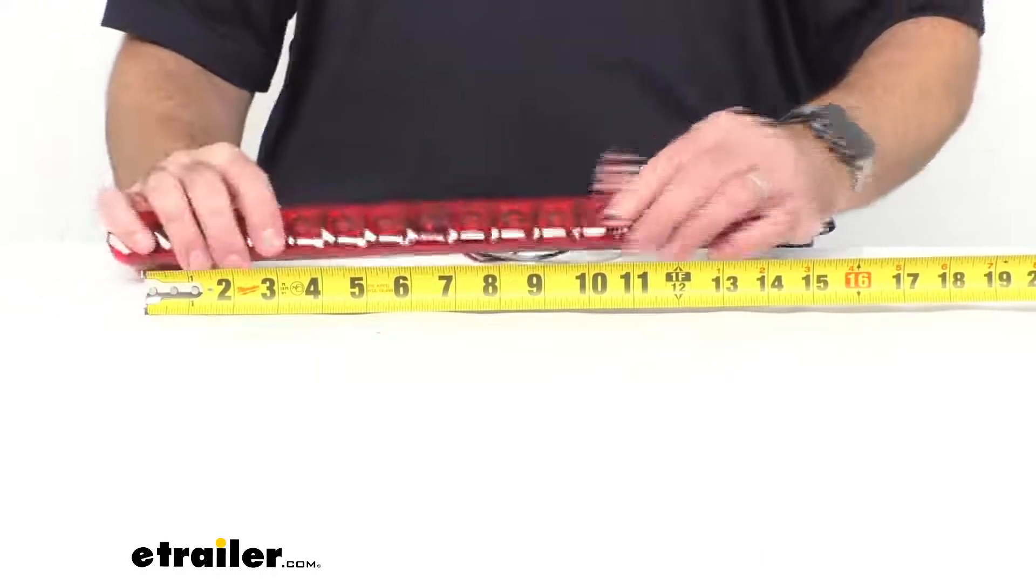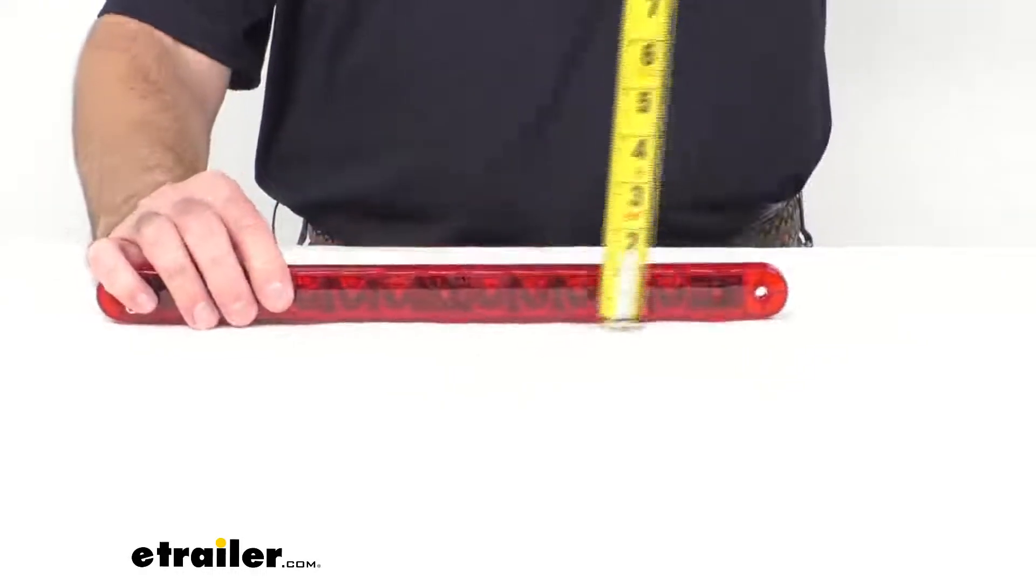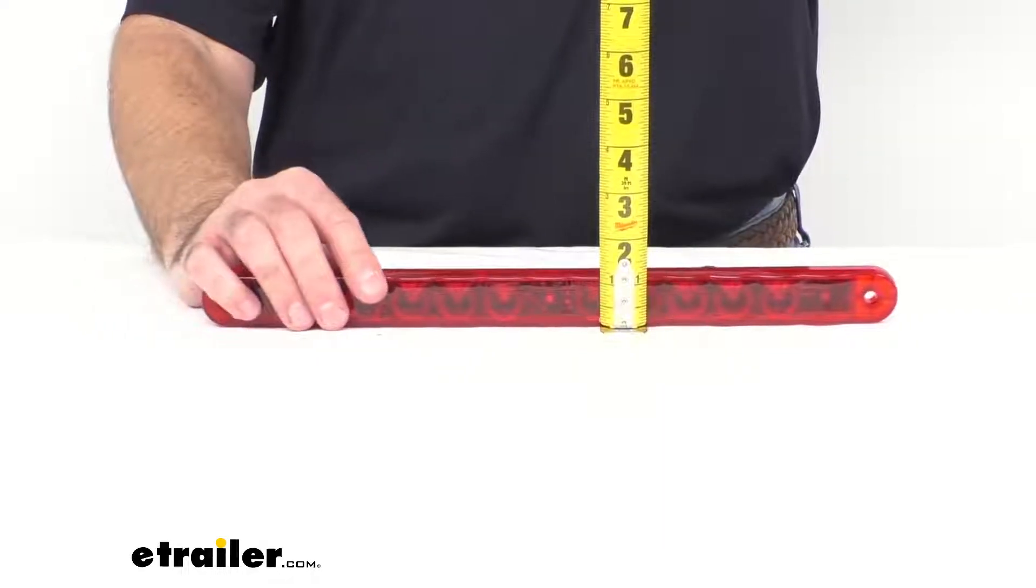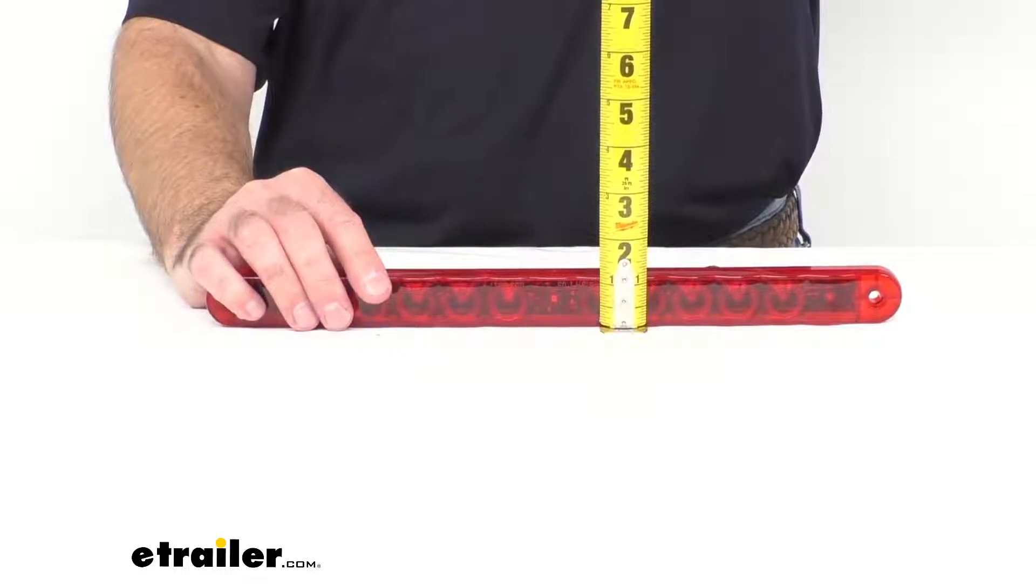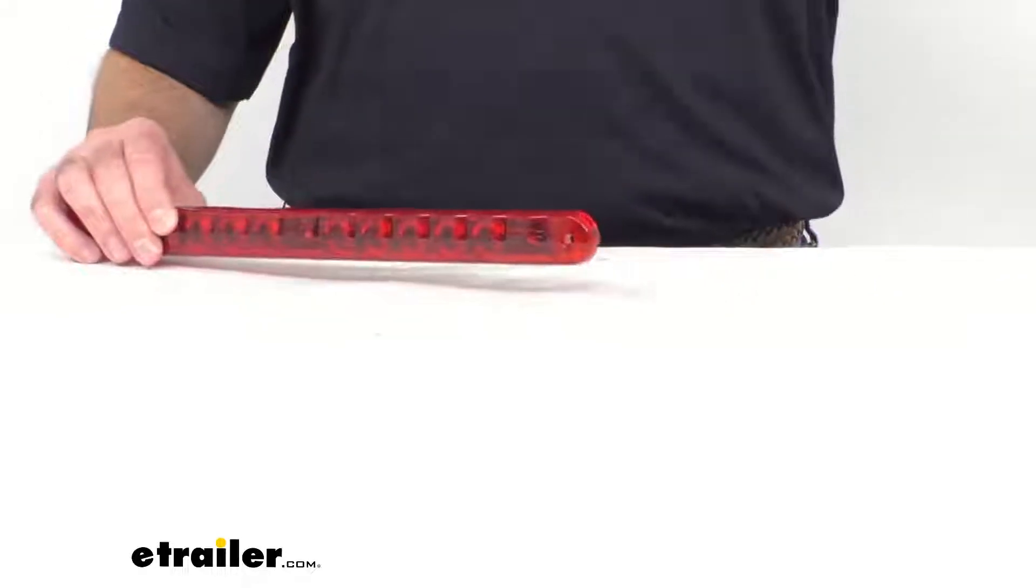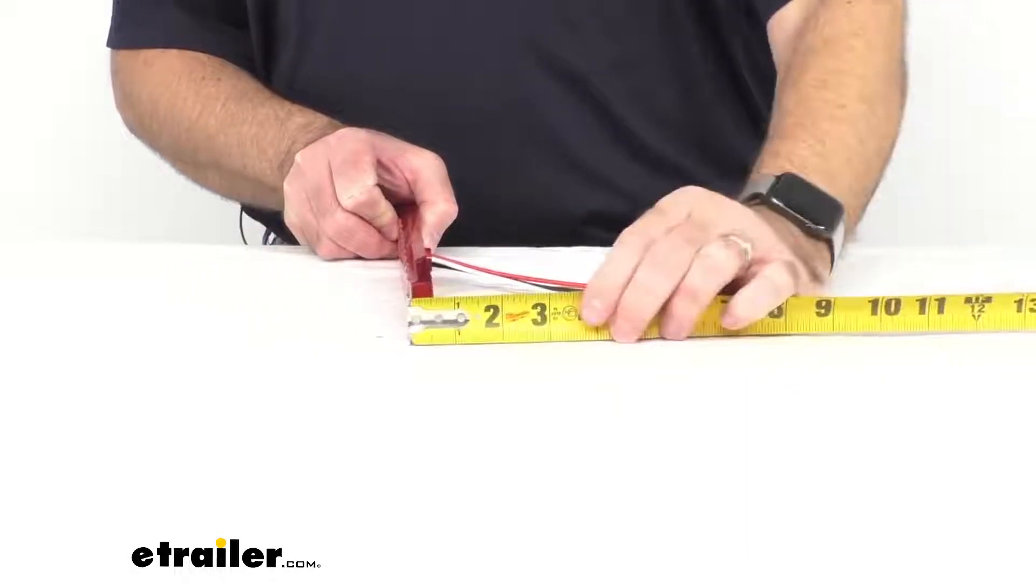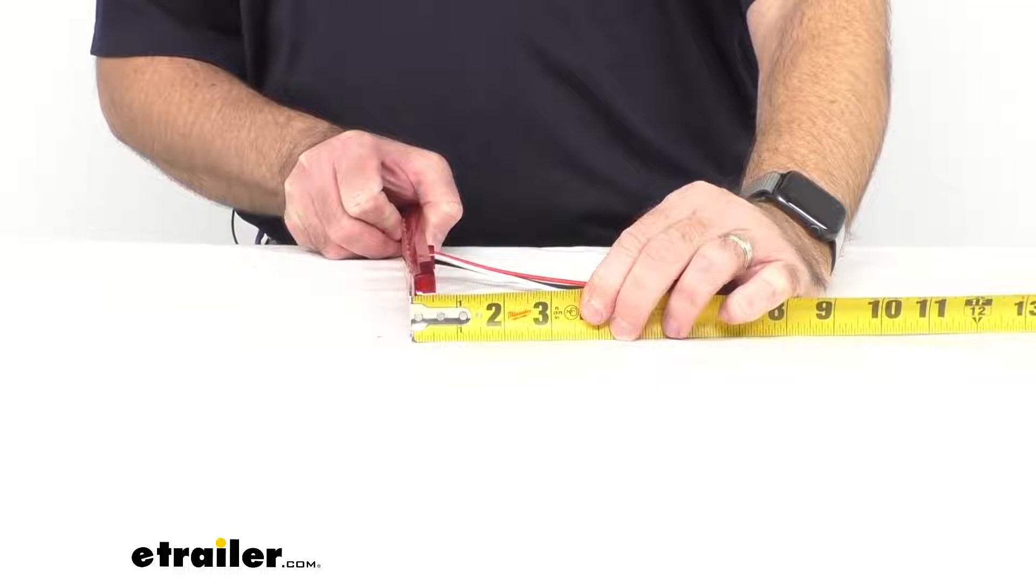And in regards to how tall this light is, we're going to be sitting right at about an inch and a quarter tall. And then in regards to how deep this light is, we're going to be sitting right at half an inch deep.